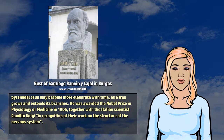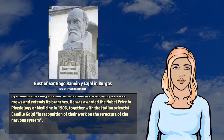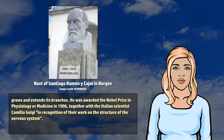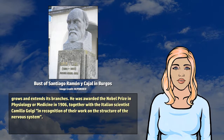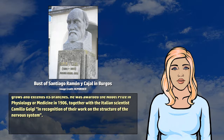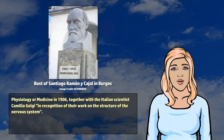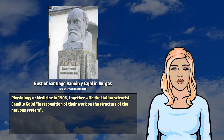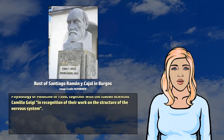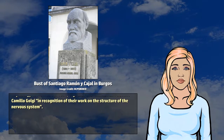He was awarded the Nobel Prize in Physiology or Medicine in 1906, together with the Italian scientist Camillo Golgi, in recognition of their work on the structure of the nervous system.